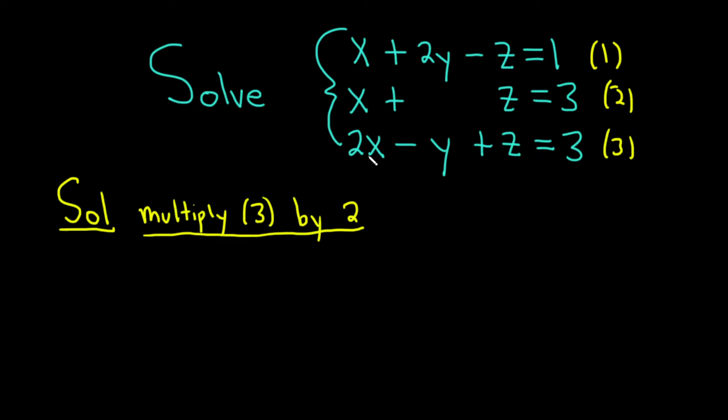So when we do that, we get 2 times 2x, which is 4x. 2 times negative y is negative 2y. And 2 times z is 2z. And that's equal to 2 times 3, which is 6. Let's go ahead and write down equation 1 right below it. So we have x plus 2y minus z equals 1. And now we can add these two equations.